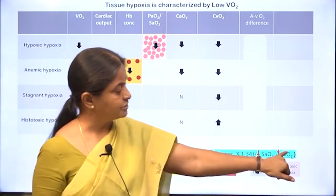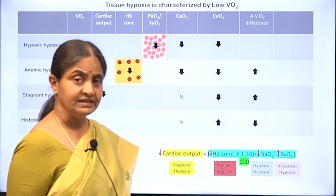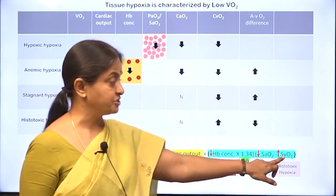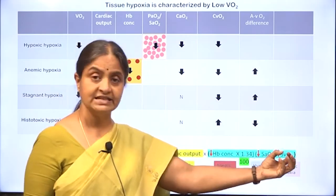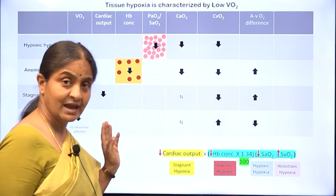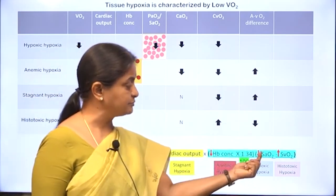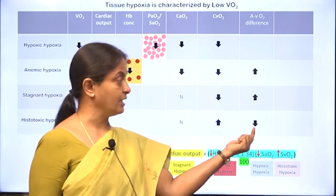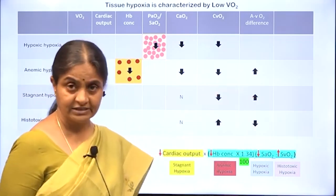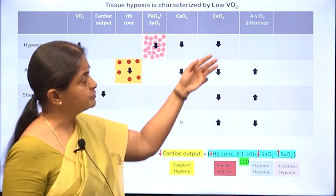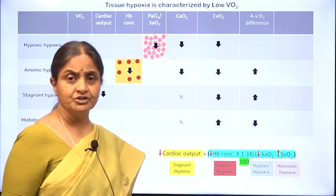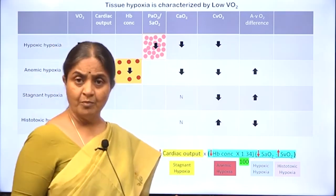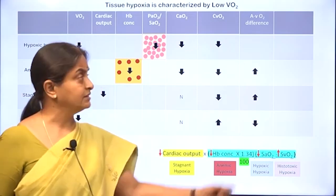Regarding arteriovenous oxygen difference: it is definitively lower in histotoxic hypoxia because venous oxygen saturation is higher — tissues are not extracting enough oxygen and it returns in venous blood unutilized. The AV oxygen difference would be higher in anemic and stagnant hypoxia. In hypoxic hypoxia, the AV oxygen difference per se can be normal, because both arterial and venous oxygen content have reduced proportionally, keeping the difference normal.